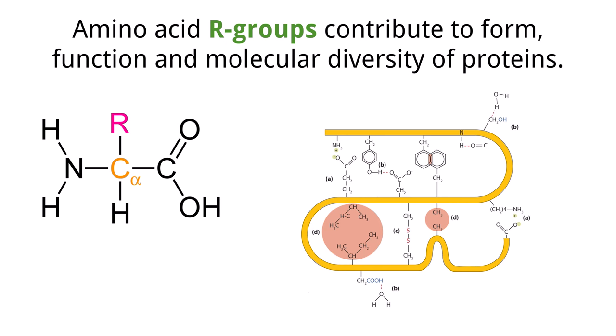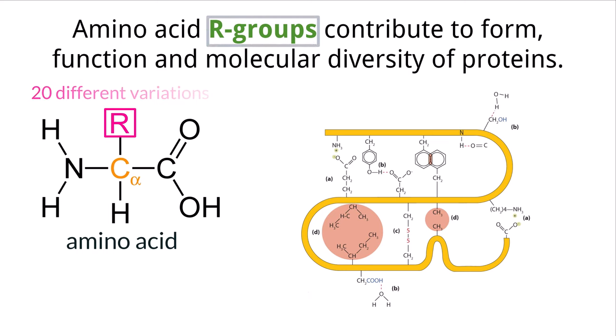In the last video, we talked about the structure of a general amino acid, and we mentioned the variable group, which we call the R group. Recall that there are 20 different versions of this R group, which means there are 20 different amino acids that are available to build proteins.